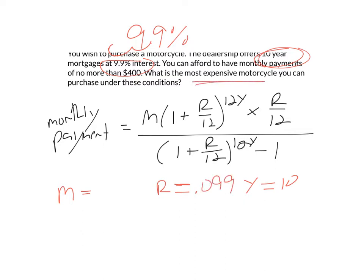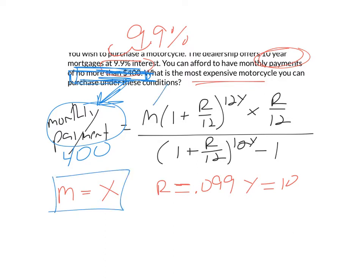What is the most expensive motorcycle you can purchase? Well, here you're trying to figure out what M is. You're trying to figure out how much money you can afford to mortgage. They're telling you that you can afford monthly payments of no more than $400. So I'm going to set my monthly payment equal to $400, and then go about finding what the M value is, and that'll tell me how expensive of a motorcycle I can buy for a $400 payment.